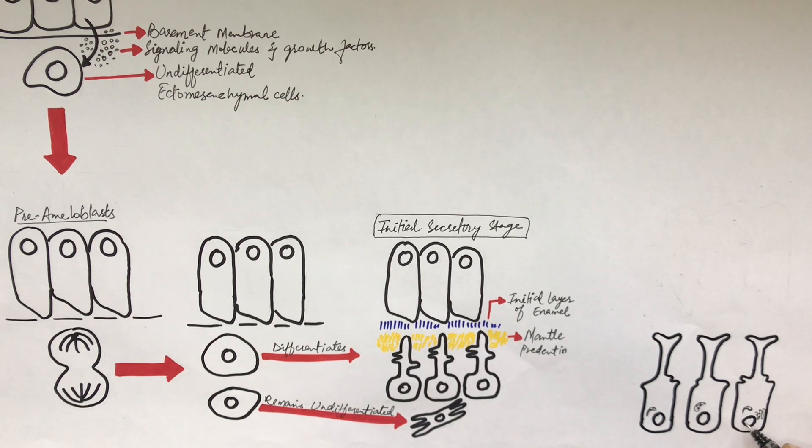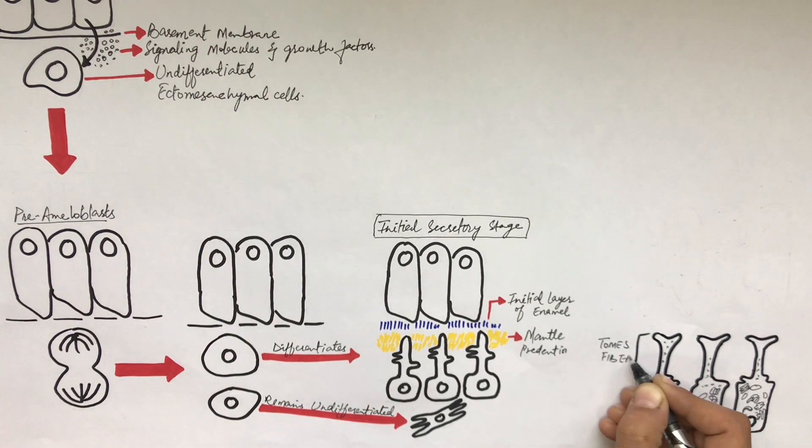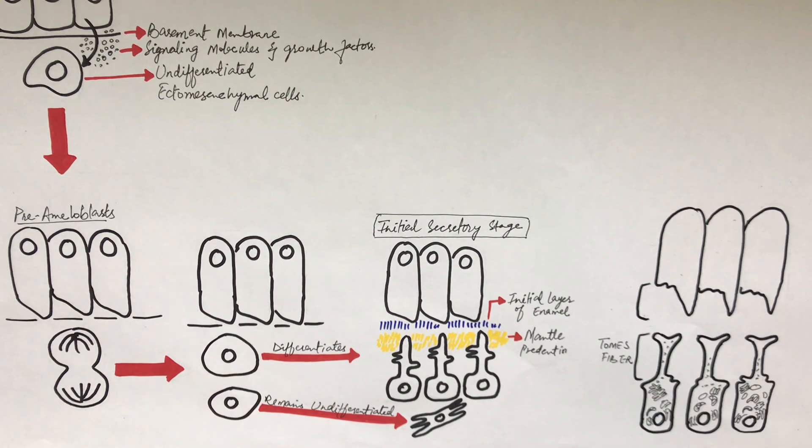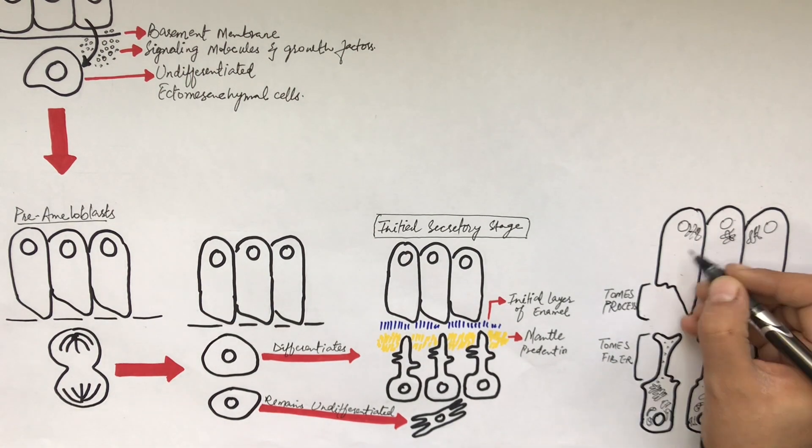As soon as the pre-odontoblast grows into the mature odontoblast, it moves away from the newly formed dentinal matrix or pre-dentine and develops a cytoplasmic process called Tomes fiber. Please keep in mind that Tomes fiber belongs to odontoblasts while Tomes process belongs to ameloblasts, and these two are not the same.